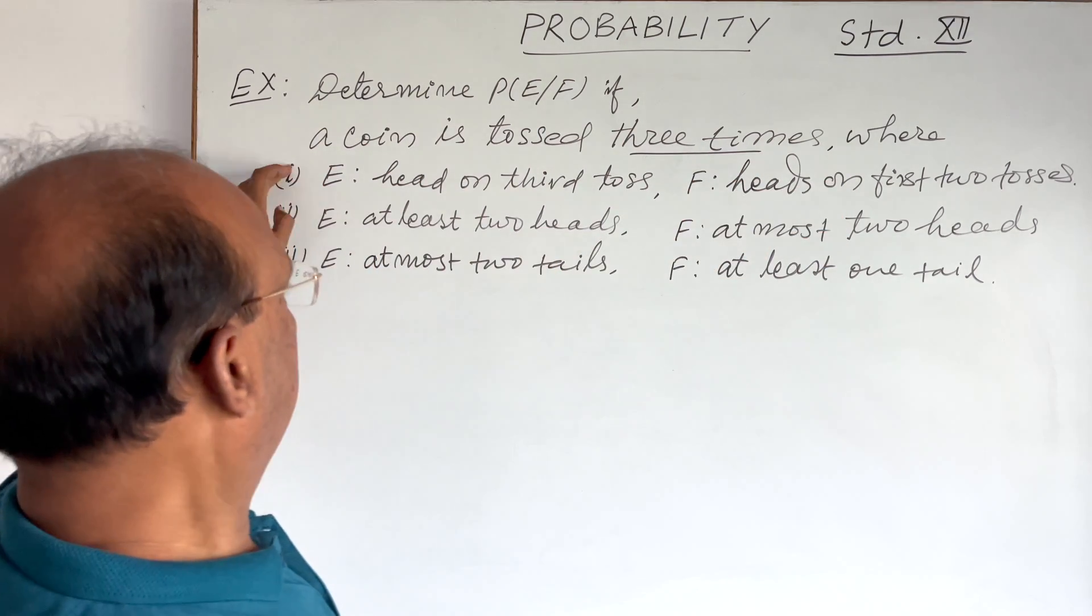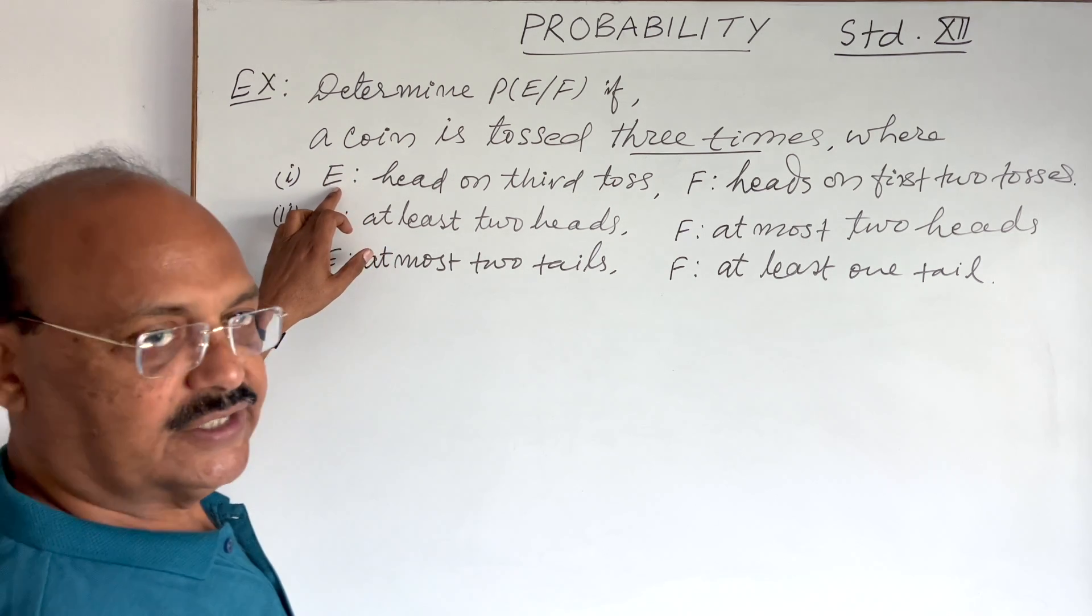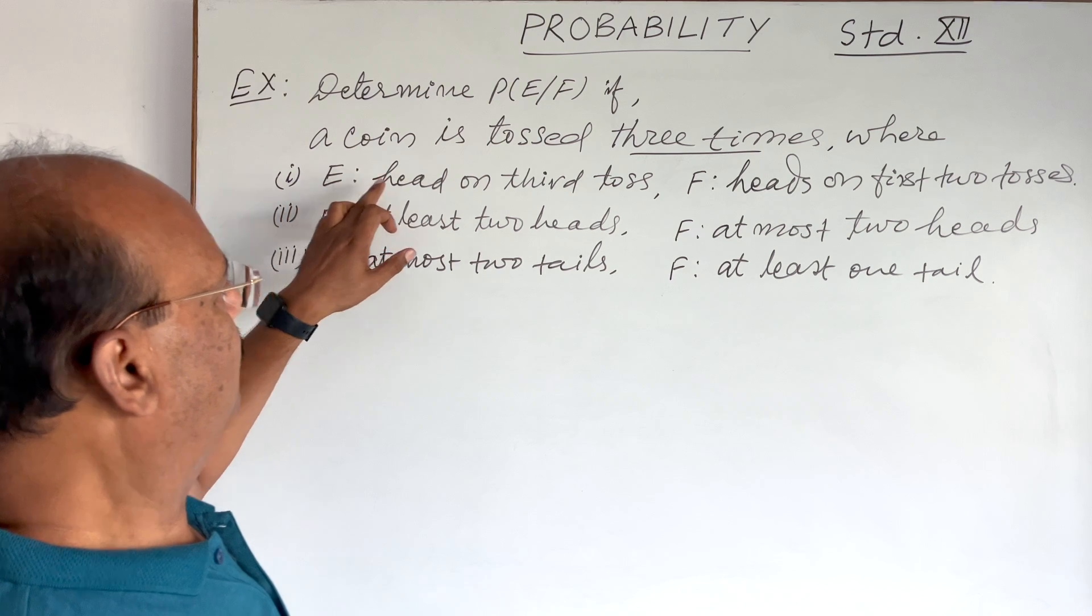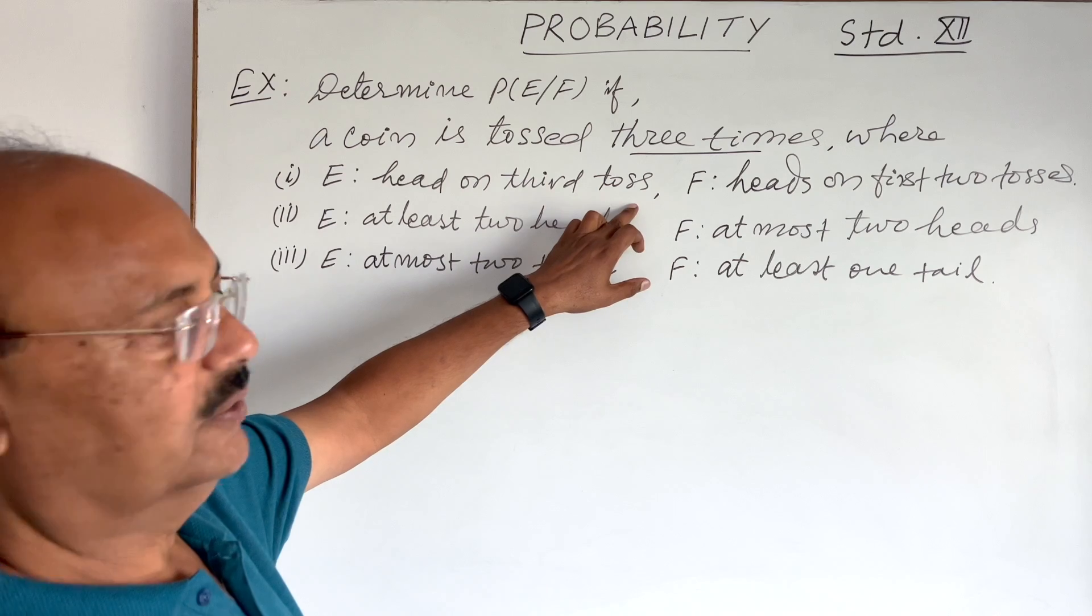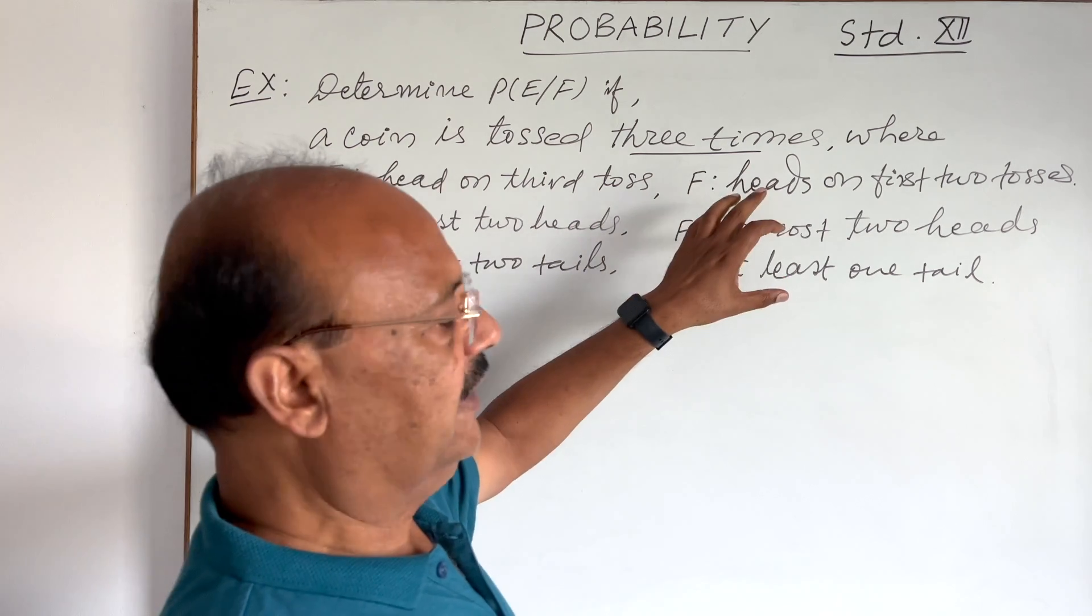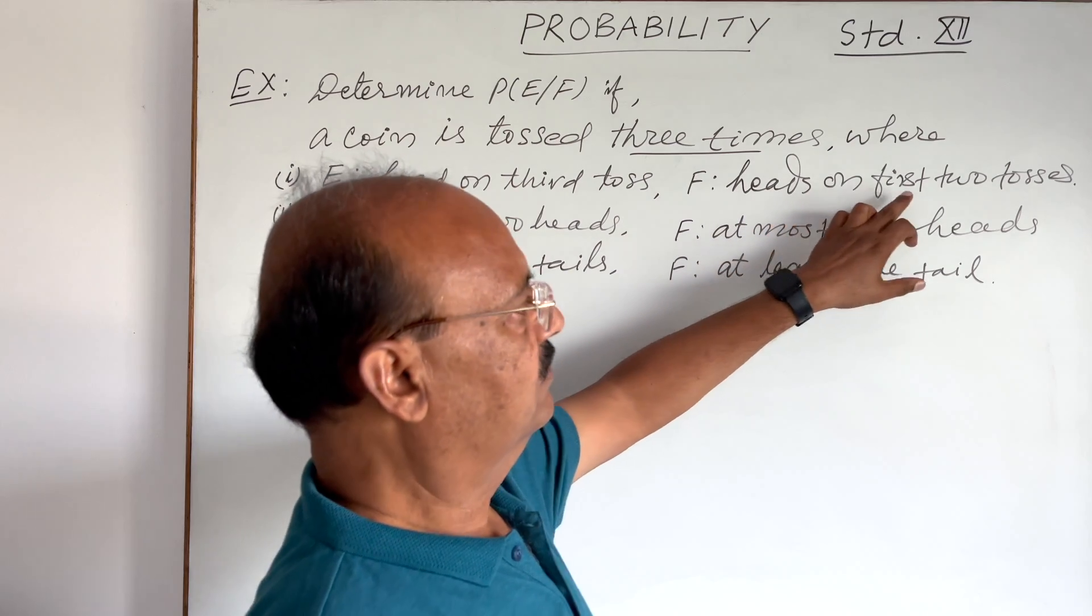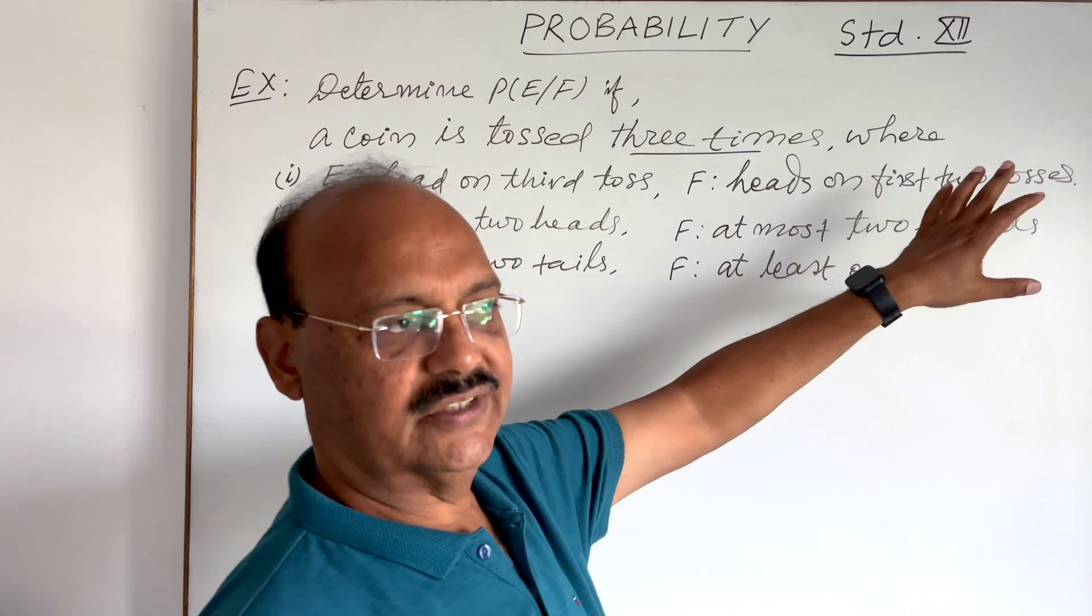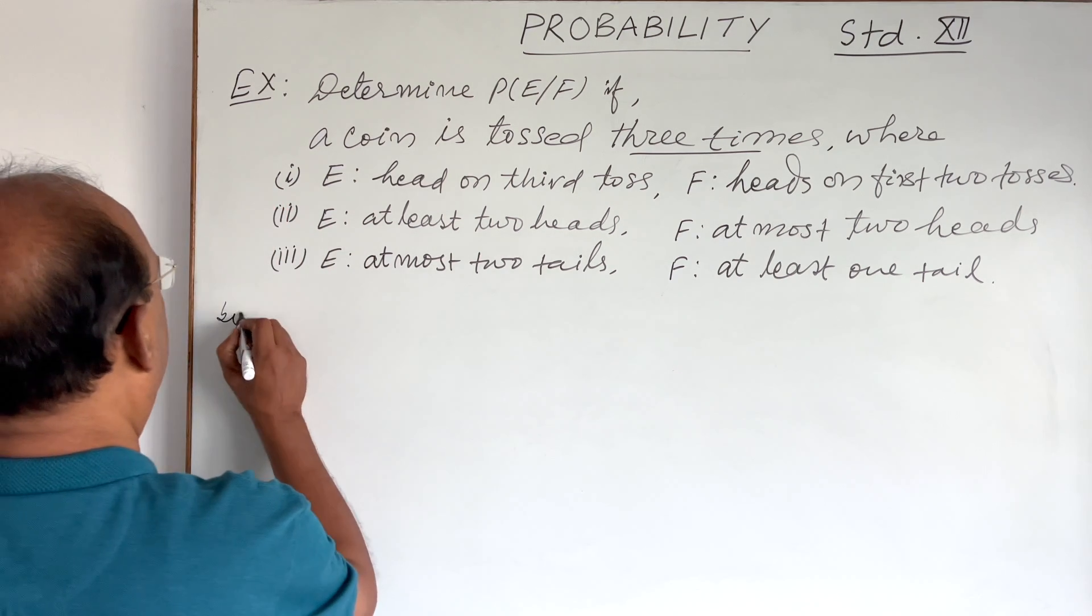There are three parts of the question. First part, E is an event that consists of all elements having a head on third toss, and F having elements consisting of heads on first two tosses. The question is interesting but very important. So let us see the solution here.